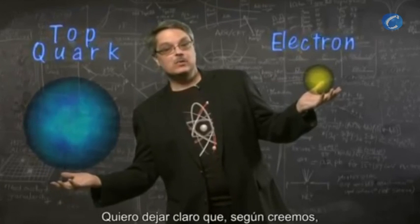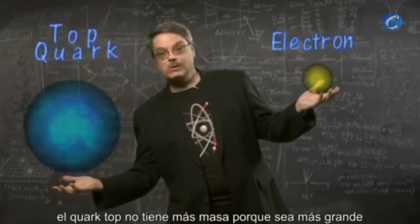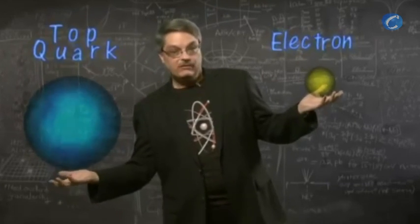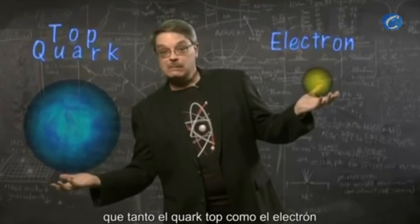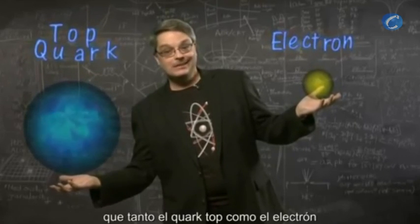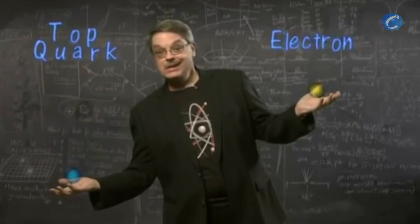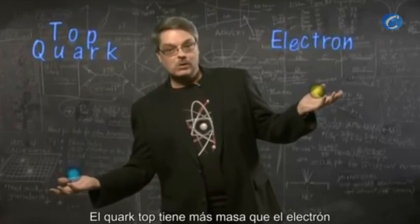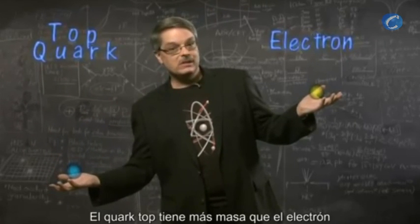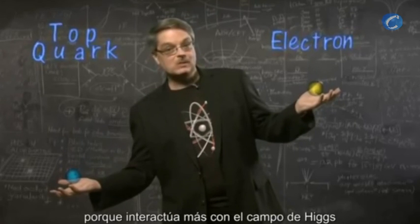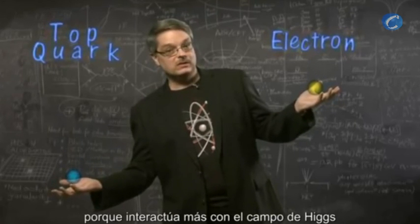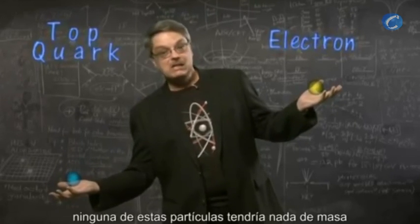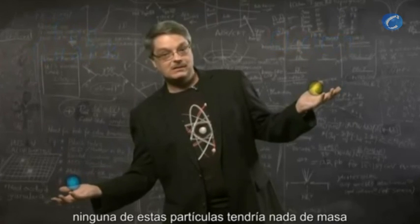I'd like to stress that we believe the top quark is not more massive because it's bigger — it's not. In fact, we believe that both the top quark and the electron are exactly the same size. Indeed, they both have zero size. The top quark is more massive than the electron simply because it interacts more with the Higgs field. Actually, if the Higgs field didn't exist, neither of these particles would have any mass at all.